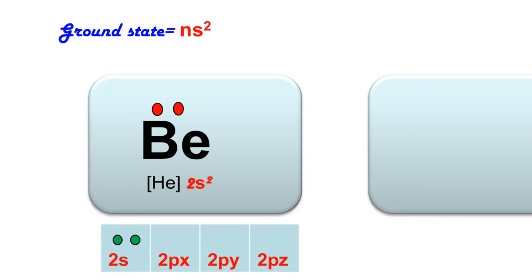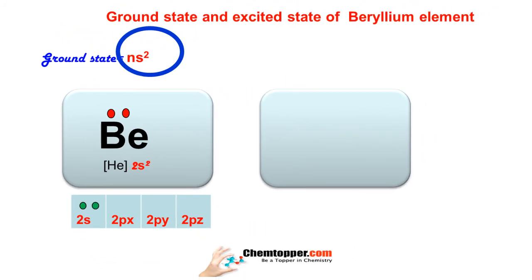This is the ground state electronic configuration where we have two electrons as a pair.